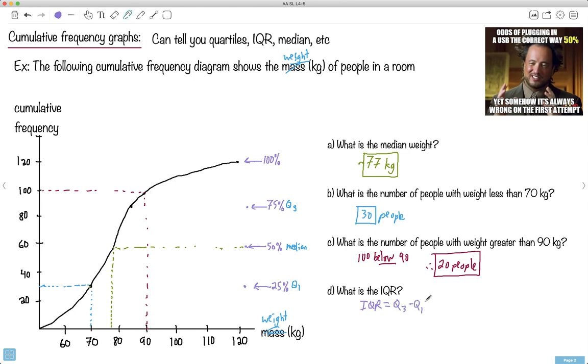You find that in your formula booklet. Well, I know Q3. Let's see. It looks like it's, what would that be? Maybe like 85, maybe? That may be Q3. Something like 85. And Q1 looks like it's maybe 70. Something like that. So that means the IQR then would be about 15.